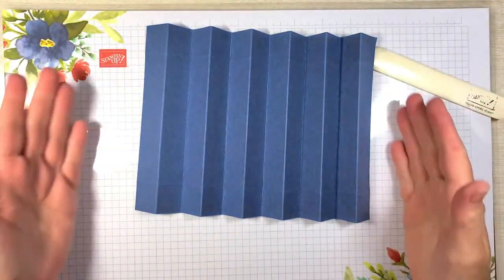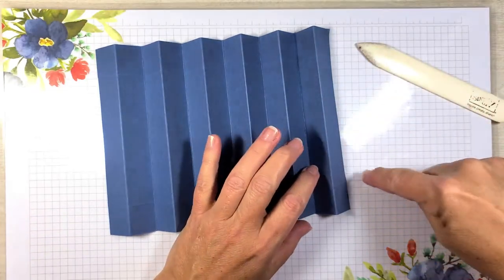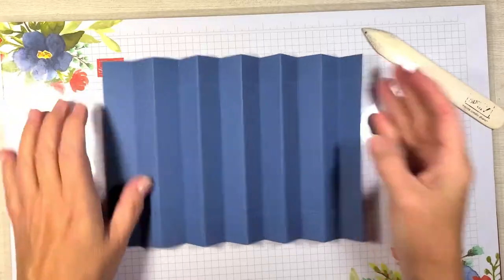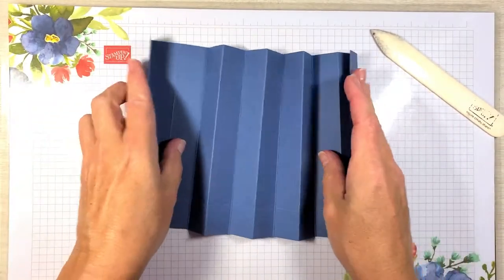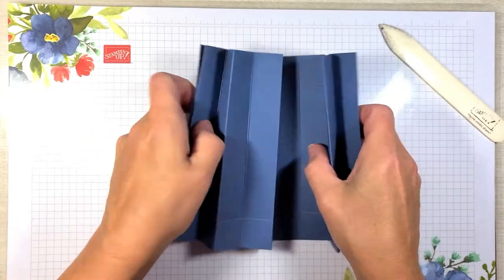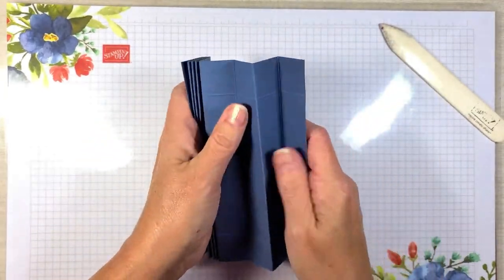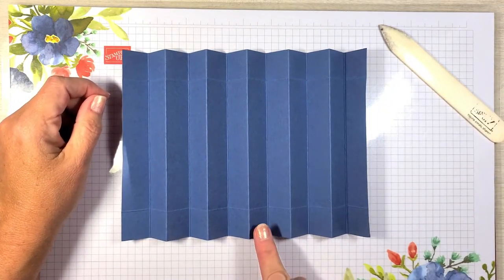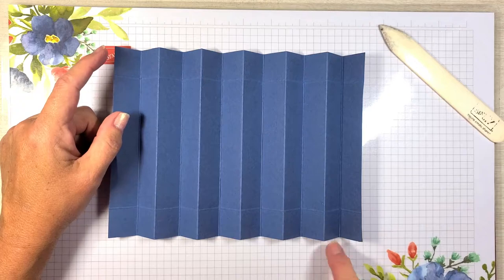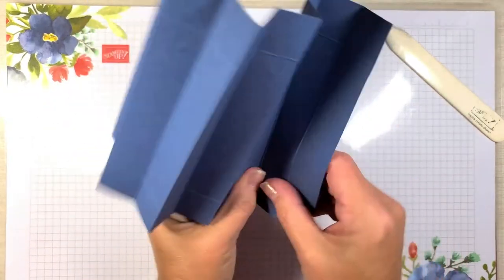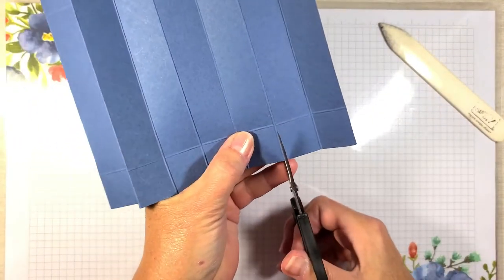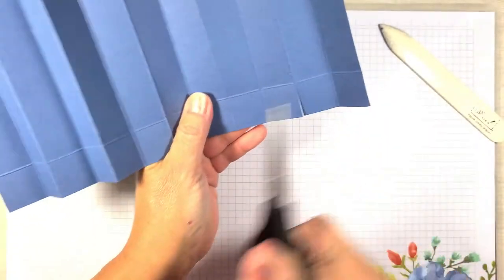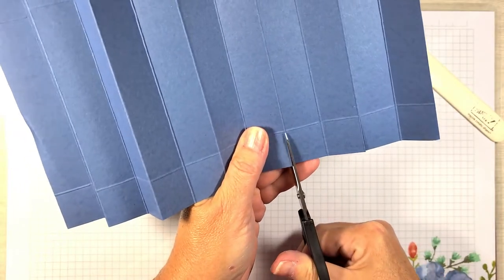Now if you have it turned over like this with your edges pointing down towards the table, you're going to want to flip it up this way. I found it easier and less confusing for me to have it up this way. So we are going to start now by these edges. We're going to cut on the mountain pieces. So this is a mountain, a valley, a mountain. Okay. So we're going to cut straight down to the first score line that goes horizontally.